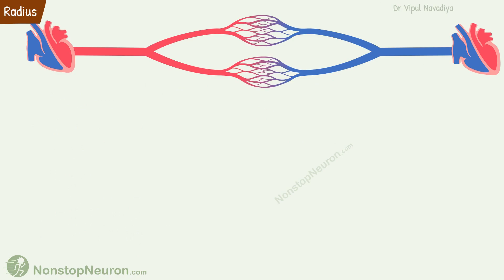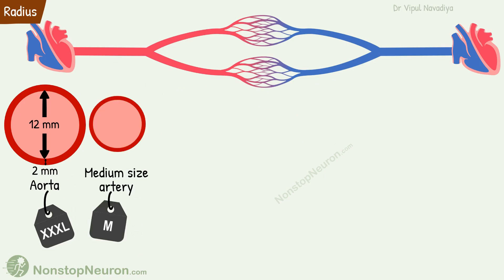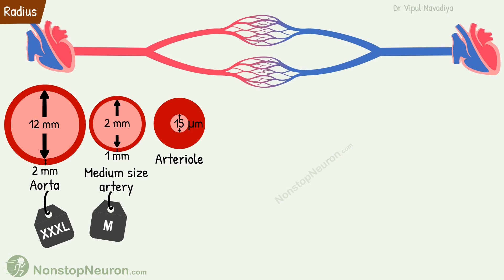Moving to the next parameter: radius and wall thickness. The aorta, which is a large elastic artery, has an interior radius of about 12 mm and its wall is about 2 mm thick. Medium-size arteries have a radius of about 2 mm and a 1 mm thick wall. Arterioles are 15 µm wide and 20 µm thick.